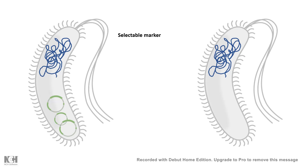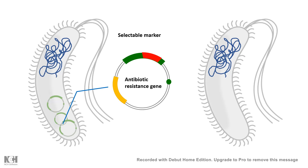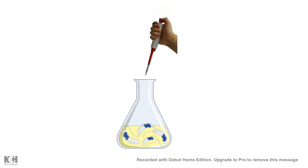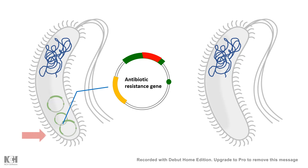That's why selectable markers come into the picture. A selectable marker selects bacteria against some selection pressure — most commonly an antibiotic resistance gene encoded by the plasmid. If antibiotic is added to the culture media, normal bacteria die. Only bacteria carrying the antibiotic resistance gene on the plasmid survive and grow.